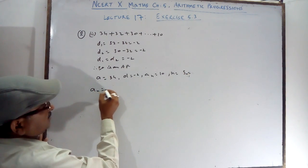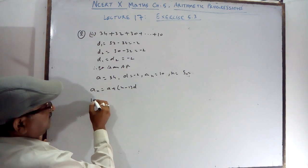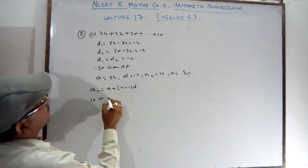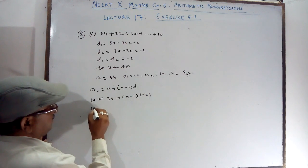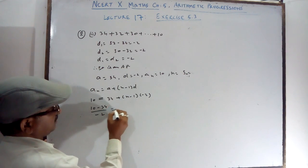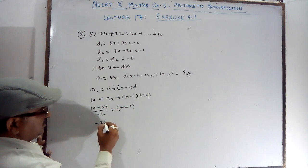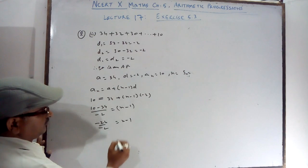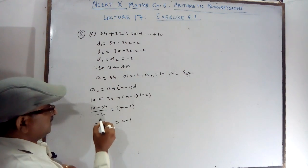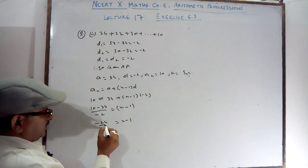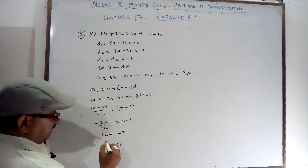For N, use the formula: AN equals A plus (N minus 1) into D. AN is given as 10. So: 10 equals 34 plus (N minus 1) into minus 2. Then (10 minus 34) divided by minus 2 gives N minus 1. Minus 24 by minus 2 equals 12, so 12 plus 1 equals N. Therefore N equals 13.